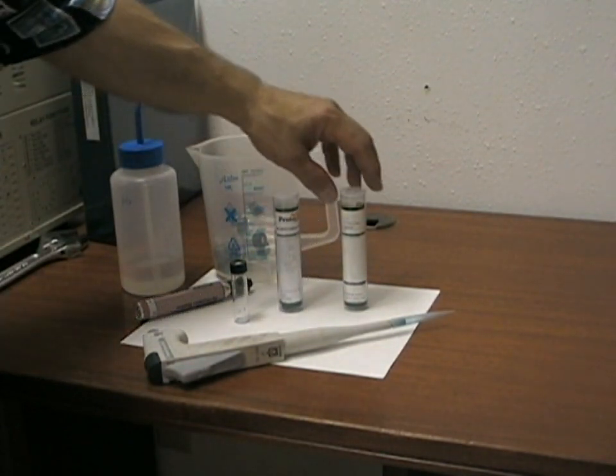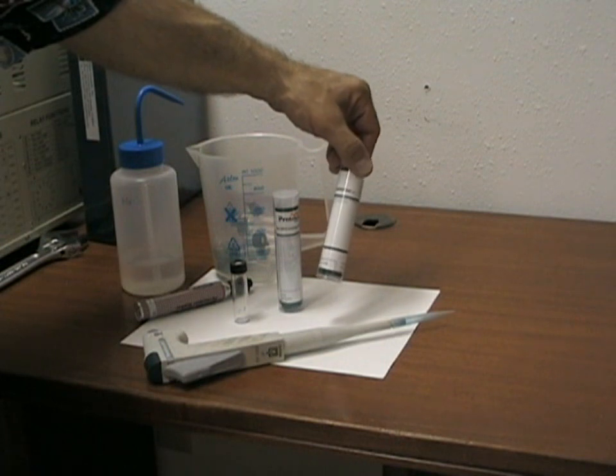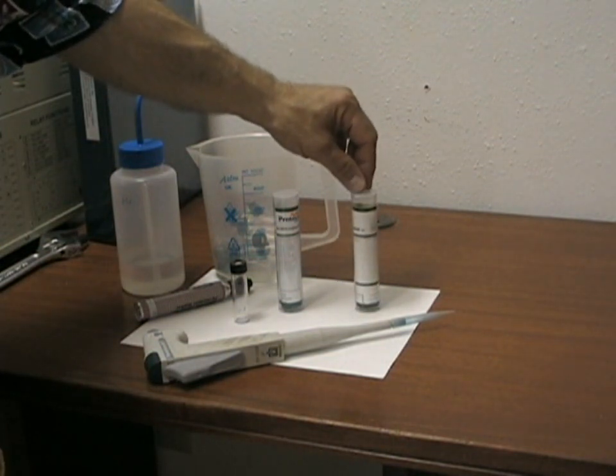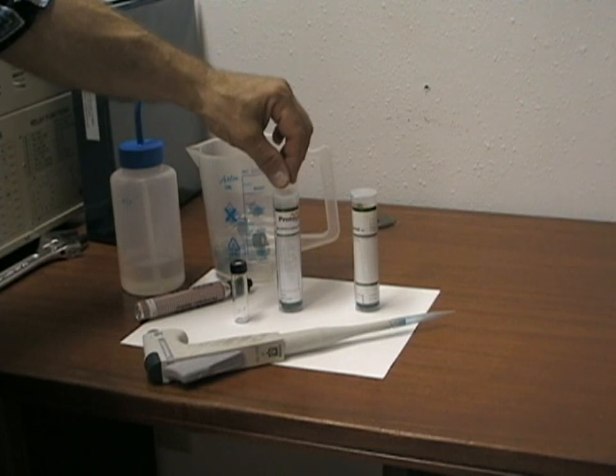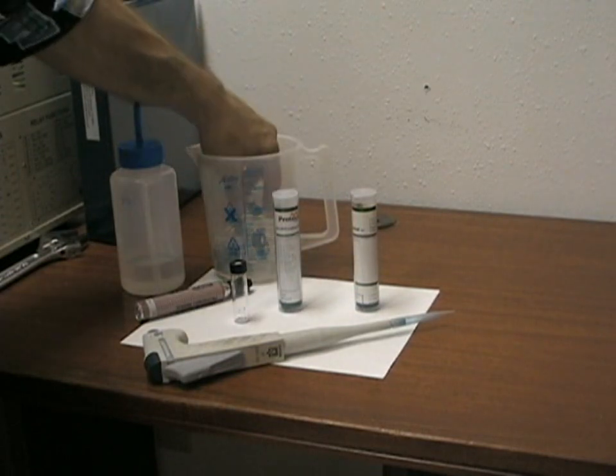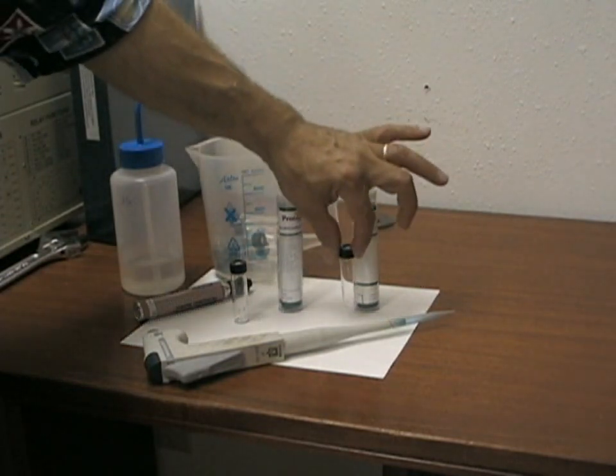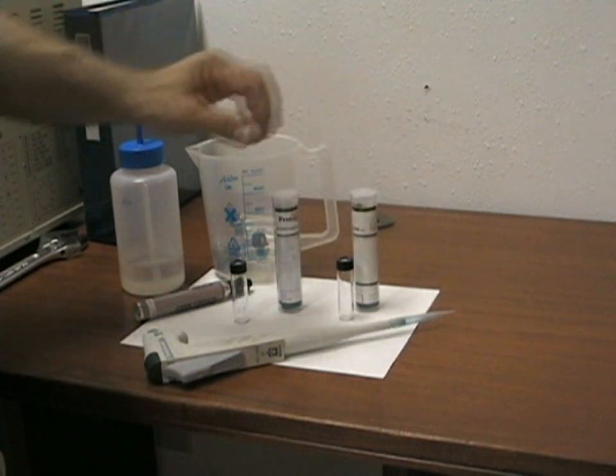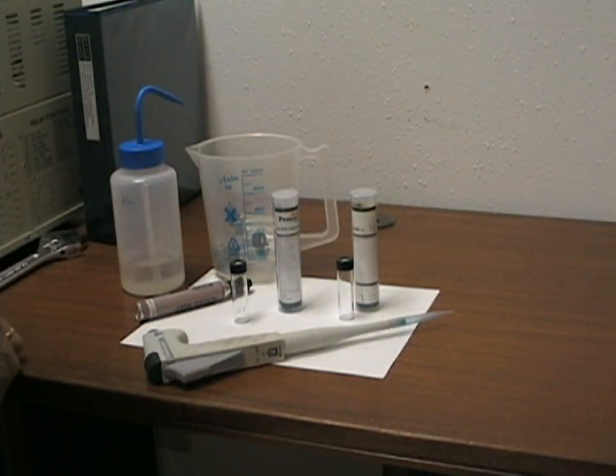Please note that the acetaldehyde is run as a separate standard because it is not stable when mixed with all of the other materials. So we will prepare a 100 part per million acetaldehyde separately and run that by itself to make our complete calibration table.